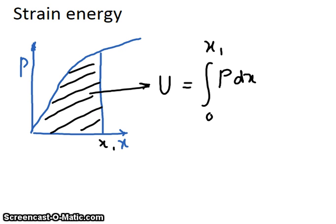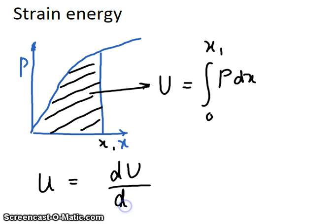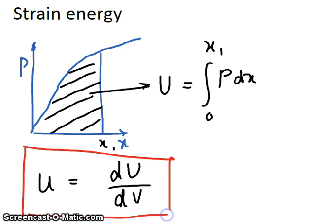Strain energy density is just strain energy per unit volume. I'm going to write strain energy density with a small u as dU by dV. Remember that because we're going to be using it later.